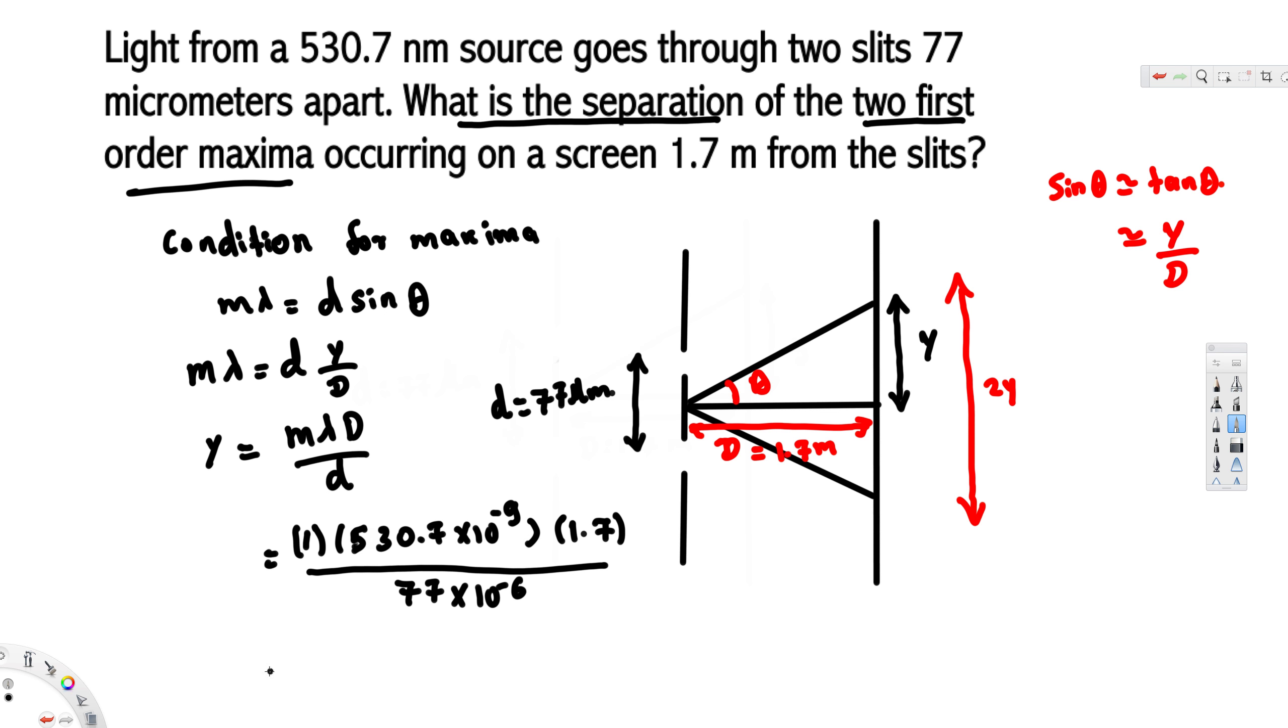Okay, that's it. From this one we can find out our y value. That's going to be 0.0117 meters. And if we calculate 2y, we have to multiply this one by 2. That's going to be our final answer. 2y is going to be equivalent to 0.0234 meters.